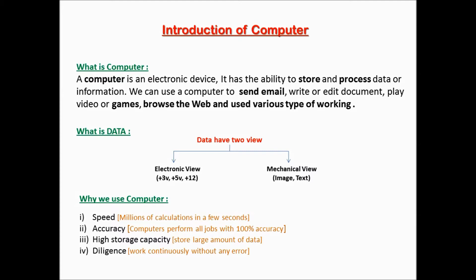Why we use computer? It is a very important question. Let's see the purpose. Number one, speed — a computer can perform millions of calculations in a few seconds. Number two, accuracy — computers perform all jobs with 100% accuracy. Number three, high storage capacity — it can store a large amount of data. Number four, diligence — it works continuously without any error.